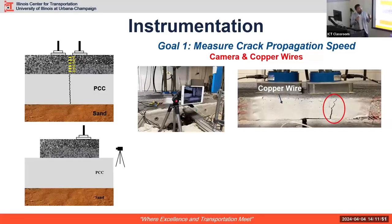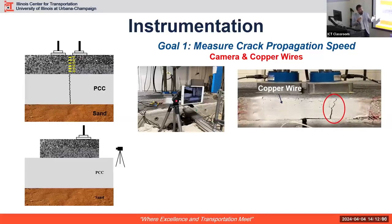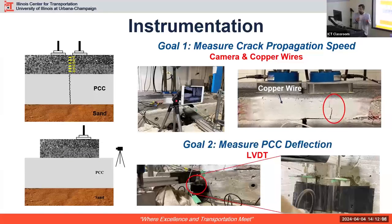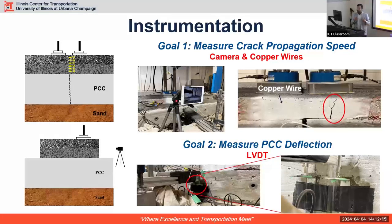For instrumentation, we placed hopper wires on asphalt concrete to measure reflective cracking propagation rate, and also had a camera to observe the mechanisms — where it starts, how it moves, and so on. In addition, we placed LVDTs on the PCC, since one of the main mechanisms of reflective cracking is movement of PCC, and we wanted to know how PCC is deflecting during the experiments.